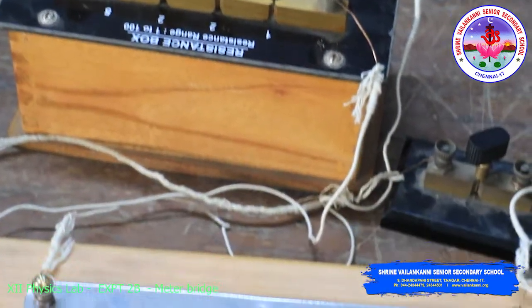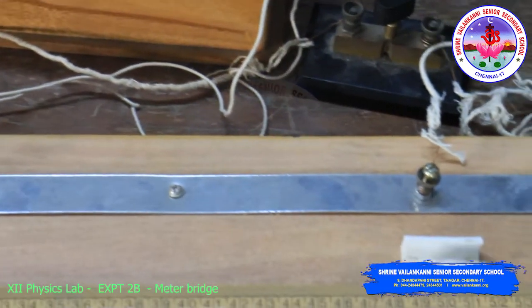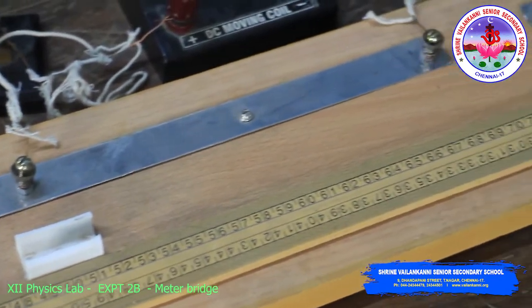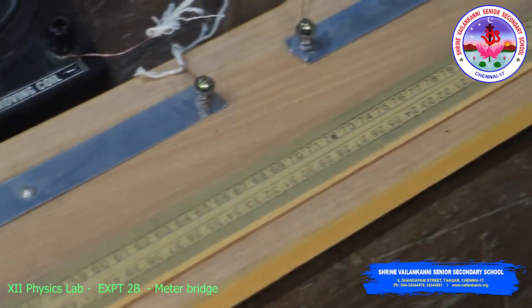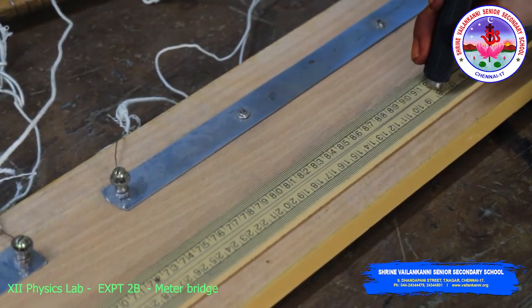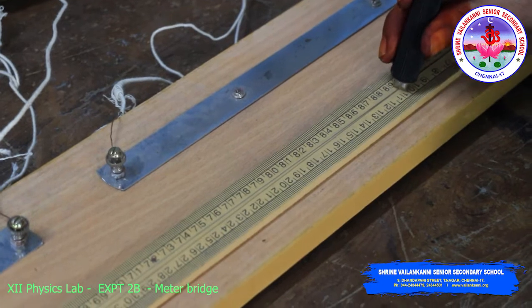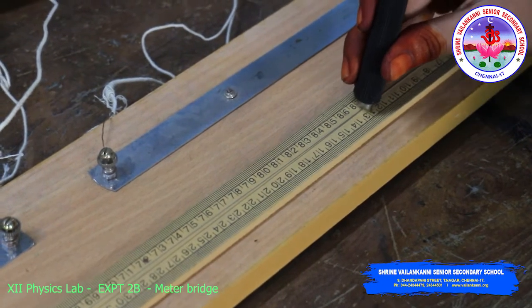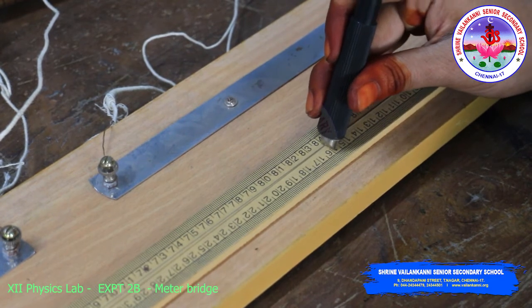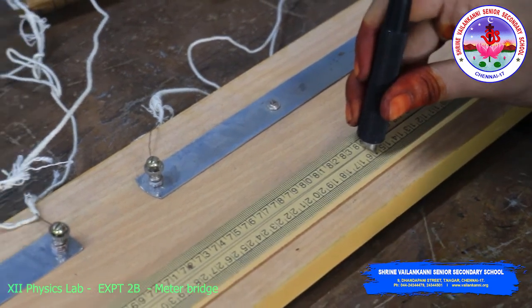See the meter bridge. In the same way, you have to slide it from left to right gently. You will get the null deflection when you are reaching the point. Now check the galvanometer.